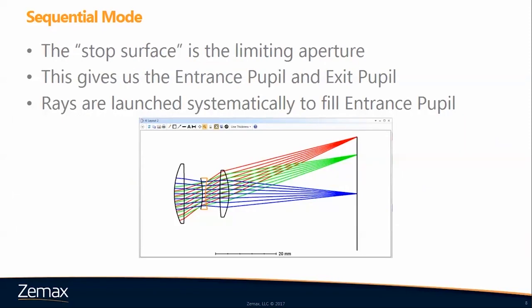The stop surface is the most limiting aperture in the system. Its image gives us the entrance pupil and the exit pupil. The entrance pupil is the stop surface as seen from the object plane, and the exit pupil is the stop surface as seen from the image plane. In sequential mode, rays are systematically launched to fill the entrance pupil, and in this screenshot the stop surface is highlighted in orange.